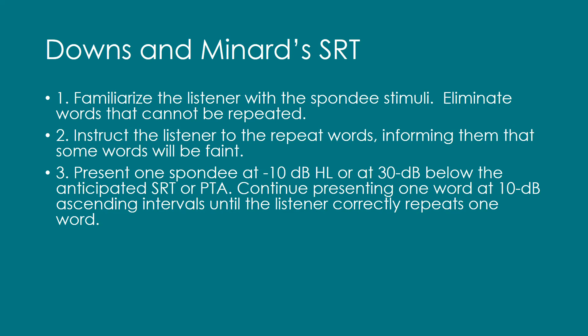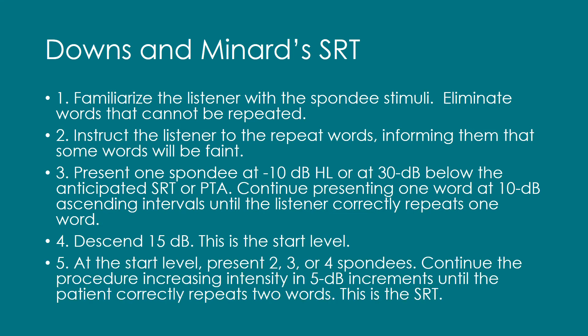Continue presenting one word at 10 dB ascending intervals until the listener correctly repeats one word. Step four: descend 15 dB — this is the start level. Step five: at the start level, present two, three, or four spondees. Continue the procedure increasing intensity in 5 dB increments until the patient correctly repeats two words. This is the SRT.